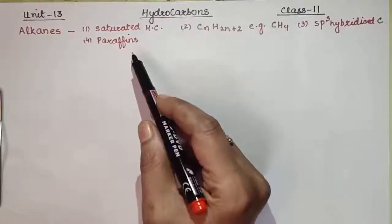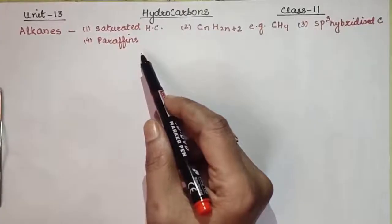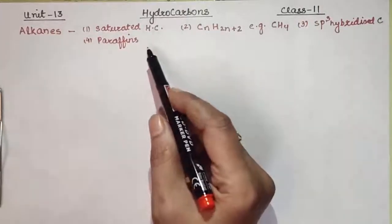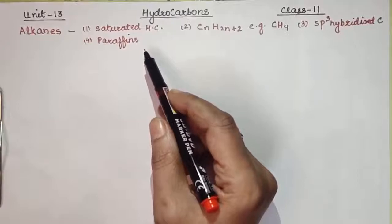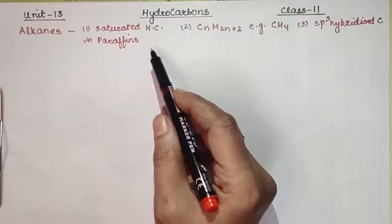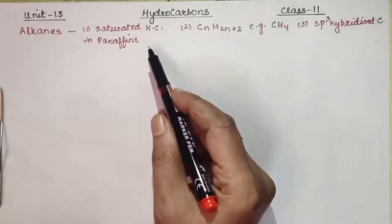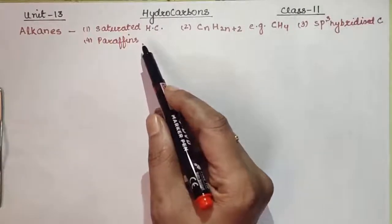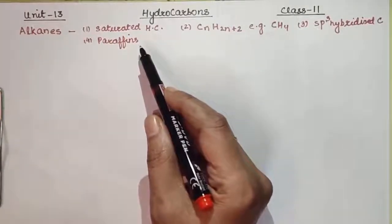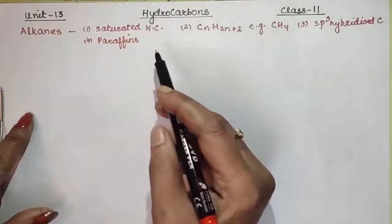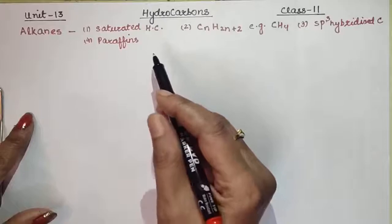When we talk about chemical properties of alkanes, alkanes mostly undergo substitution reactions, because there is no double bond or triple bond. Since there is no unsaturation, addition reactions will not occur in alkanes — only substitution reactions will be seen.